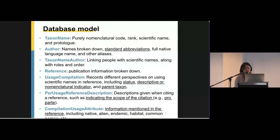Author and reference have independent table and information broken down into fields. And taxon name and reference linked to author by association tables individually. Usage compilation is for recording name usage, including status, description, or nomenclature indicator, and parent taxon. Per usage reference description is for reviewing and each per usage is a citation. And compilation usage attribute is for recording the information mentioned in the reference. So everything in front of the reference.